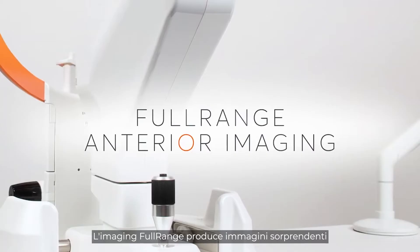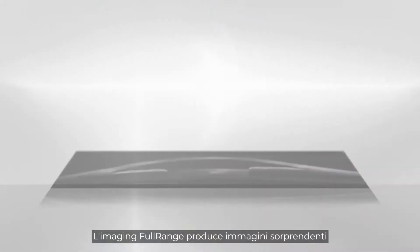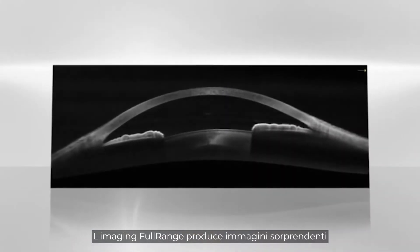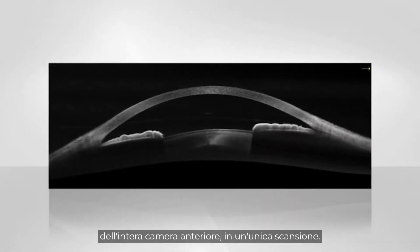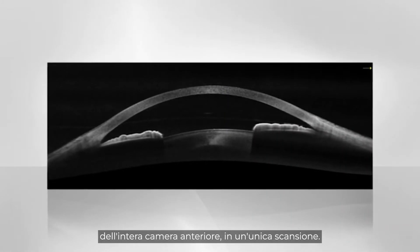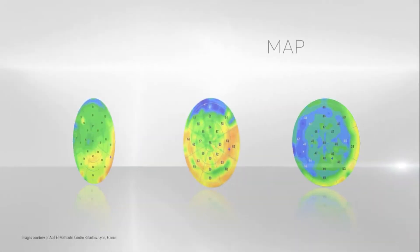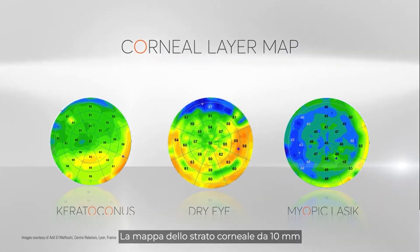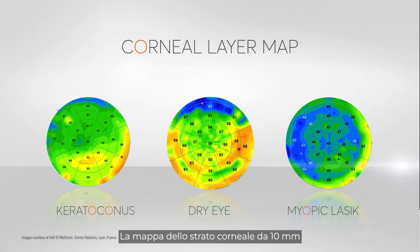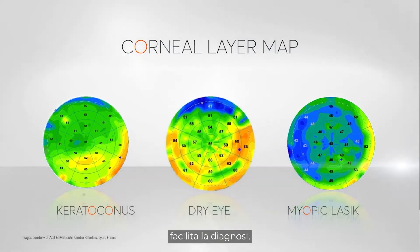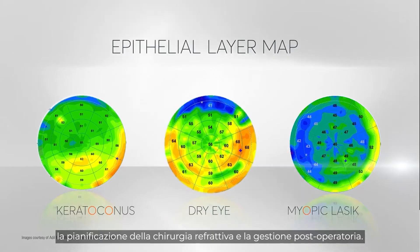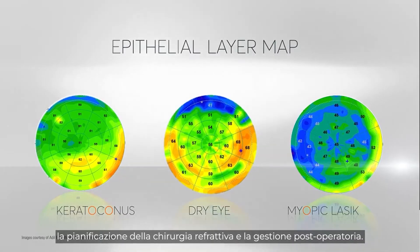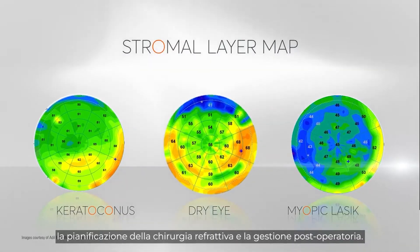Full range anterior imaging captures stunning views of the entire anterior chamber in a single scan. The 10mm corneal layer map aids in disease diagnosis, refractive surgery planning, and post-op management.